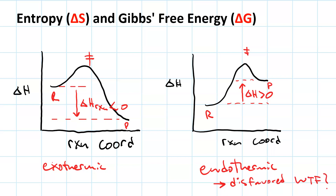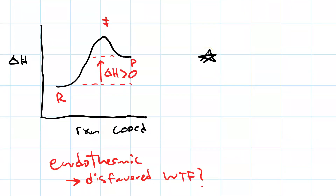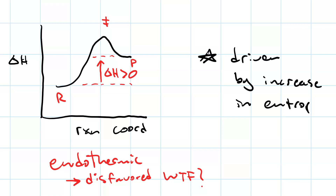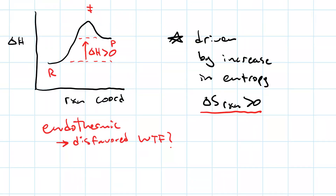You might be asking yourself, how does this even happen? What is the driving force? This reaction may be driven forward by entropy — an increase in entropy. In other words, delta S of the reaction is greater than zero. Delta S is positive when the number of freely moving particles increases.